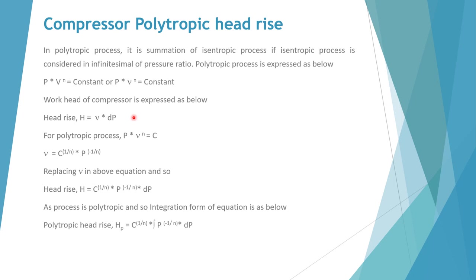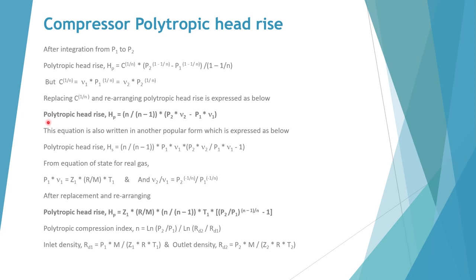Now for compressor polytropic head rise: polytropic process is a summation of isentropic processes where compression is carried out in very small stages. The polytropic process is written as p into v to the power n is constant, or p into specific volume to the power n is also constant. Using the same approach, the polytropic head rise Hp equals c to the power 1 by n, integrated as integral of p to the power minus 1 by n into dp. This gives polytropic head rise as n upon n minus 1 into the bracket p2 into v2 minus p1 into v1.